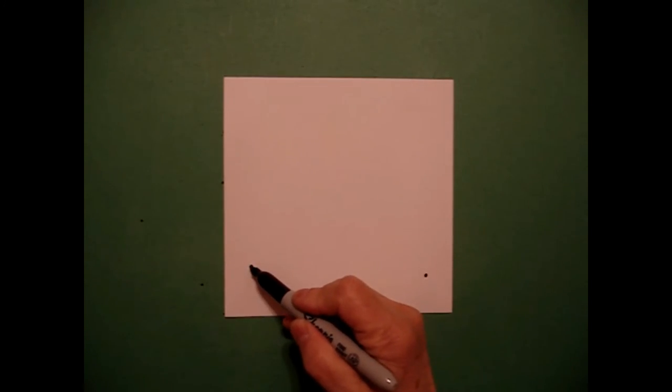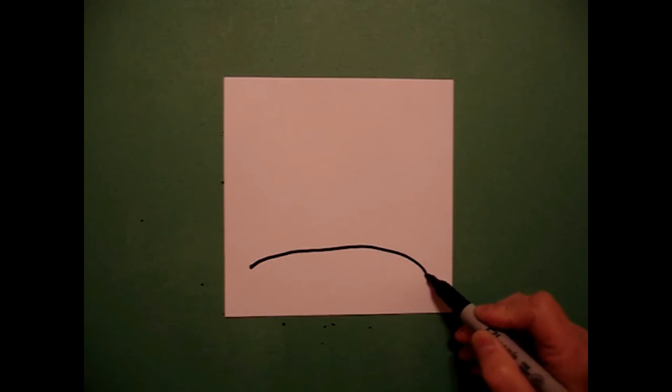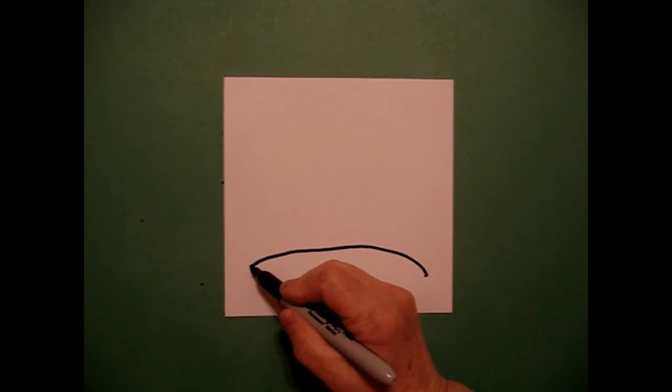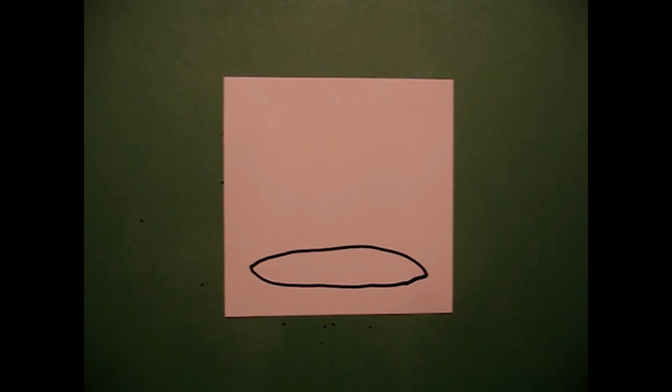From the left, I'm going to draw a slightly curved line over, connect, go back, draw another slightly curved line over, up, connect.